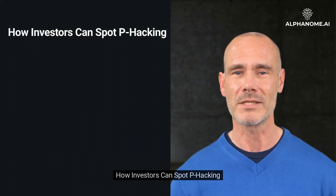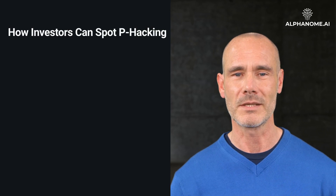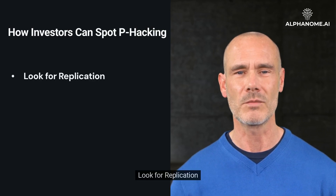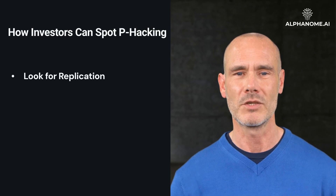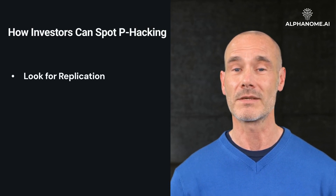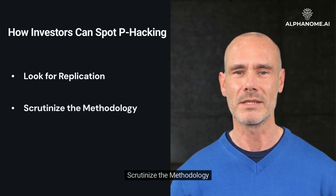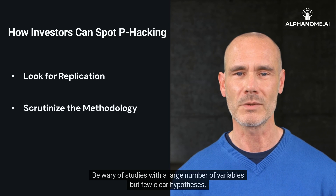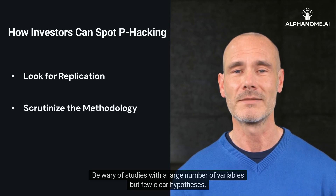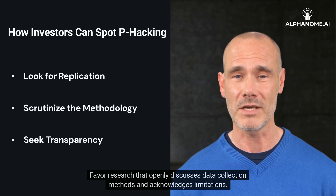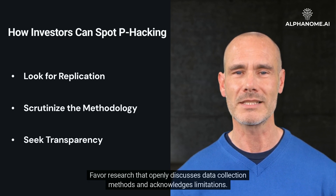How can investors spot P-Hacking? To guard against P-Hacking, investors should look for replication — trusting studies that have been replicated with similar results — scrutinize the methodology by being wary of studies with a large number of variables but few clear hypotheses, and seek transparency by favoring research that openly discusses data collection methods and acknowledges limitations.